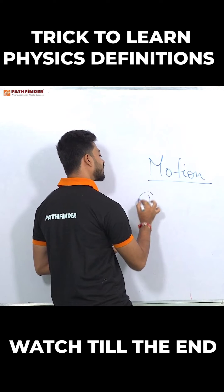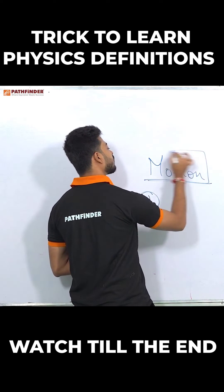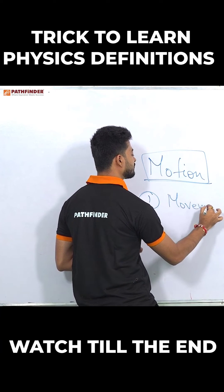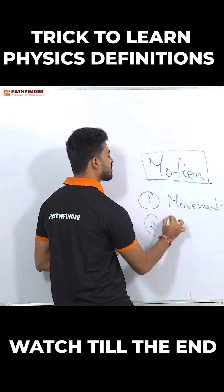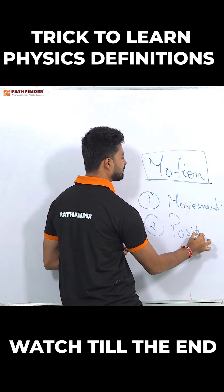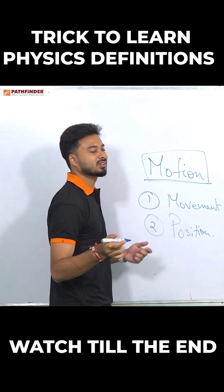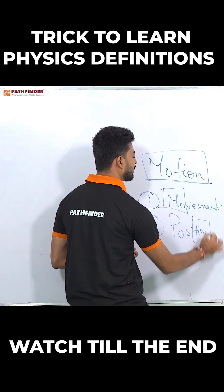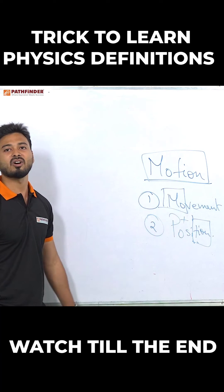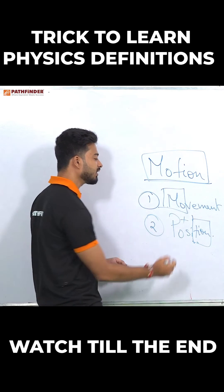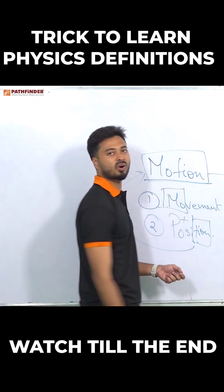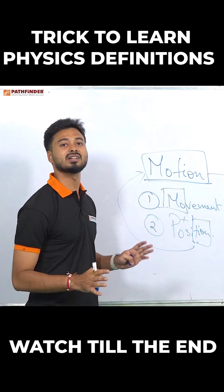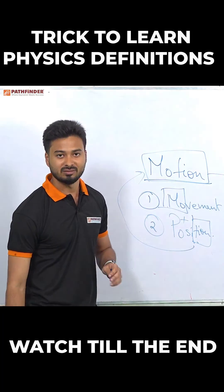So what is the trick we should follow? If we know that the word 'motion' is a collaboration of two words — 'movement' and 'change in position' — science itself is a very interesting subject. If you take the first part of 'movement' and the second part of 'position,' you get 'motion.' So motion is defined as: any object that has a movement which results in a change in position.